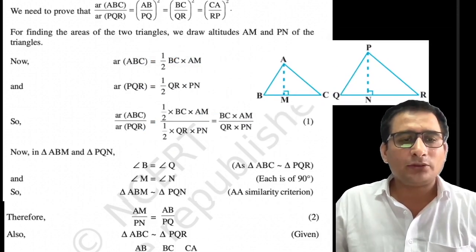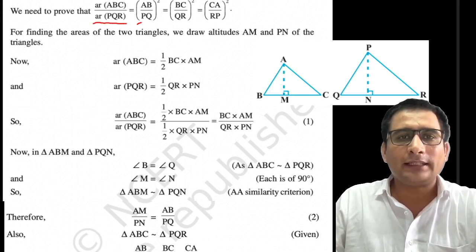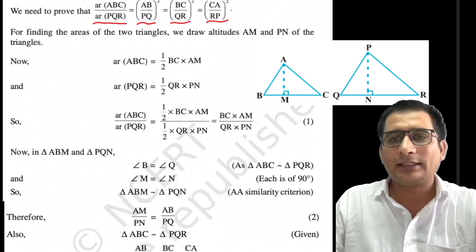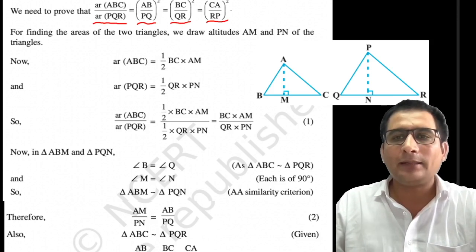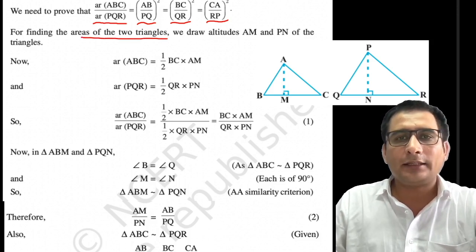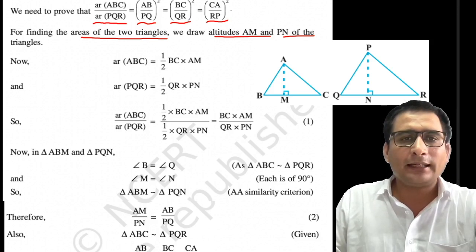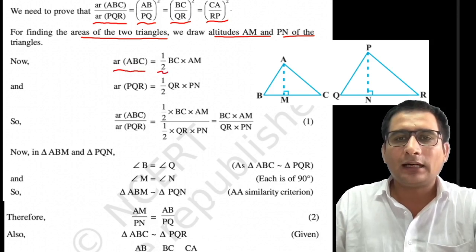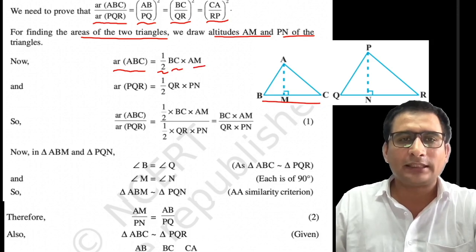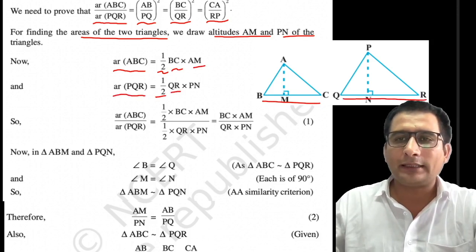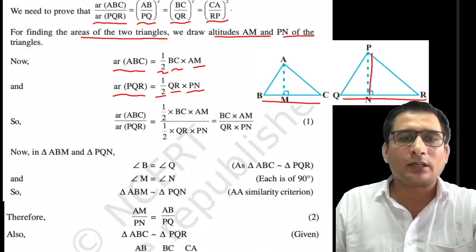So what we need to prove here in this theorem is: jo ABC aur PQR ka jo area ka ratio hai, wo sides ke ratio ke square ke equal hai. Yahan par triangle ABC hai aur triangle PQR hai. For finding the area of the triangle, altitudes banane honge — ek altitude AM bana liya hai, ek altitude PN bana liya hai for triangle PQR. Area of ABC = half into base BC into height AM. Area of PQR = half into base QR into height PN. Ab ratio kar lete hain — area of ABC divided by area of PQR — so yahan BC upon QR is equal to AM upon PN.